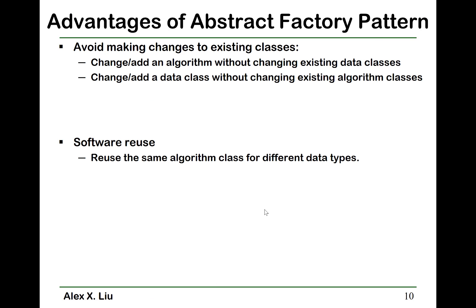Now let's look at the advantages of the abstract factory pattern from two aspects. First, how does it avoid making changes to existing classes? We can add or change an algorithm without changing existing data classes, and we can add or change data classes without changing existing algorithm classes — we separate the concerns of algorithms and data. Remember the software design principle of separation of concerns. For software reuse, we can reuse the same algorithm class for different data types.